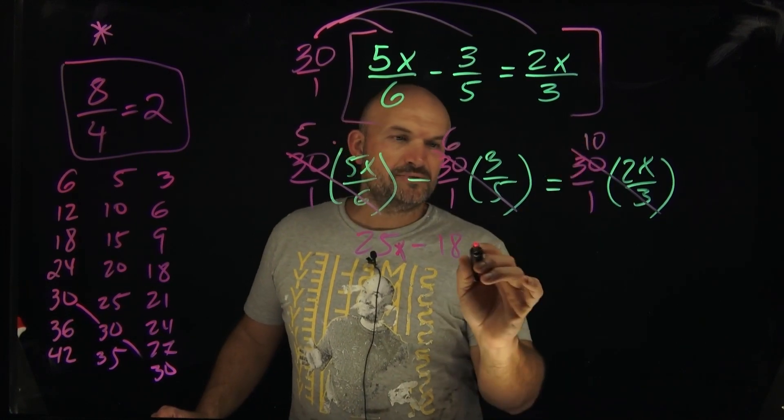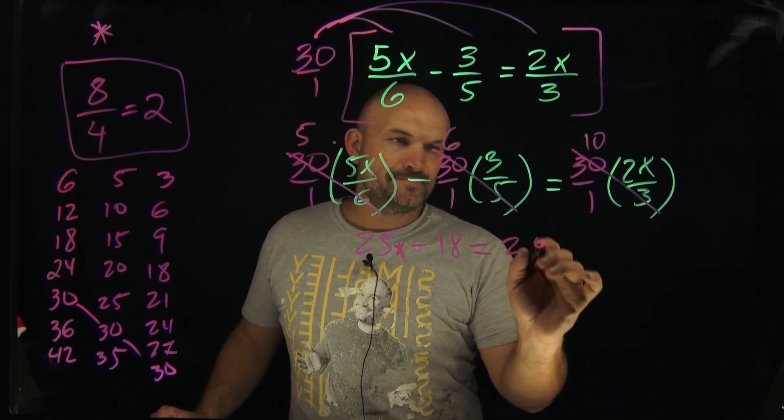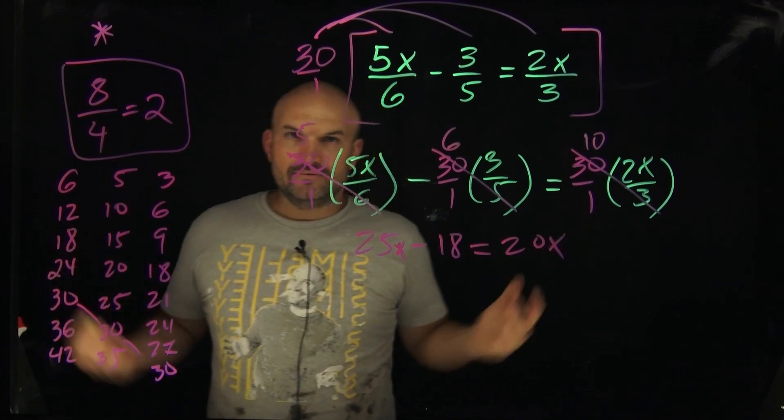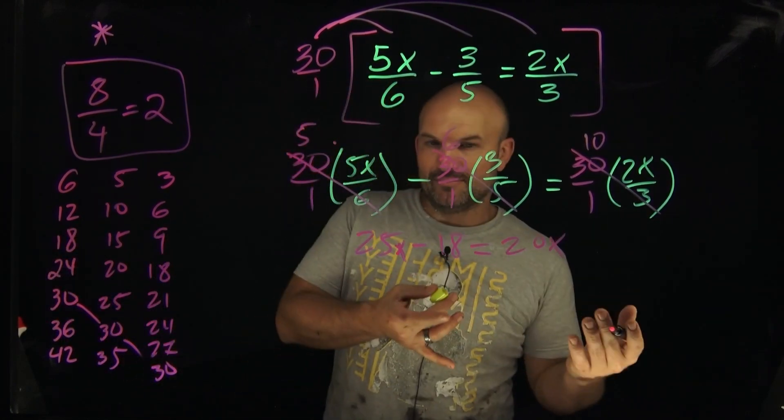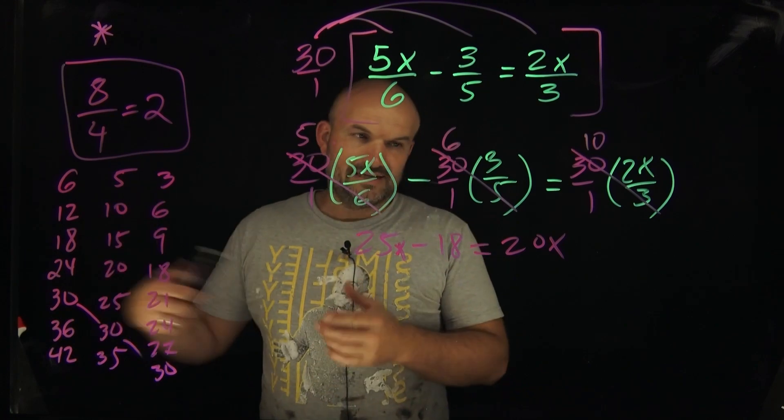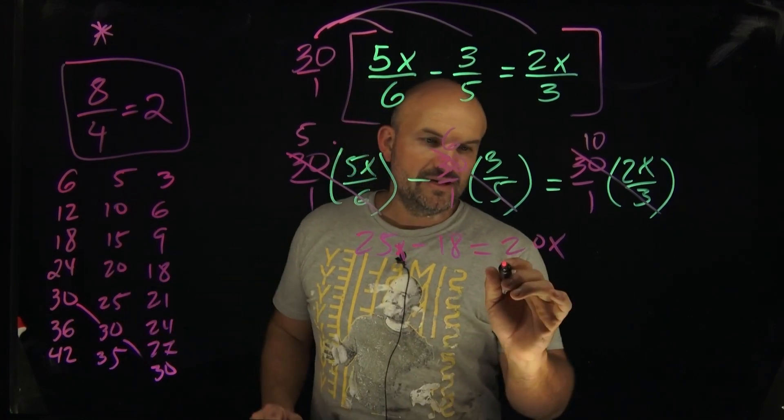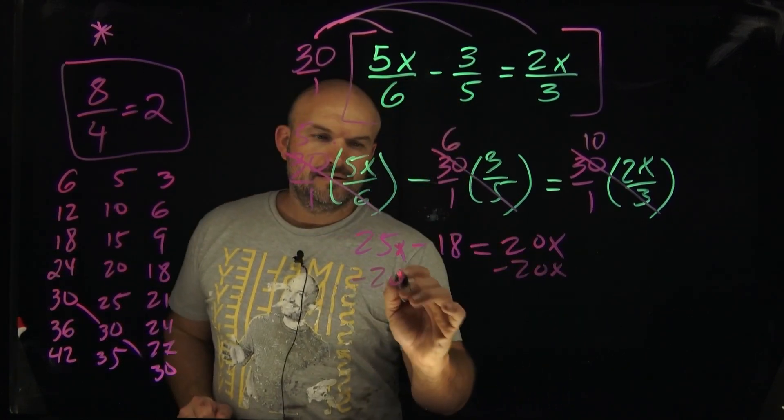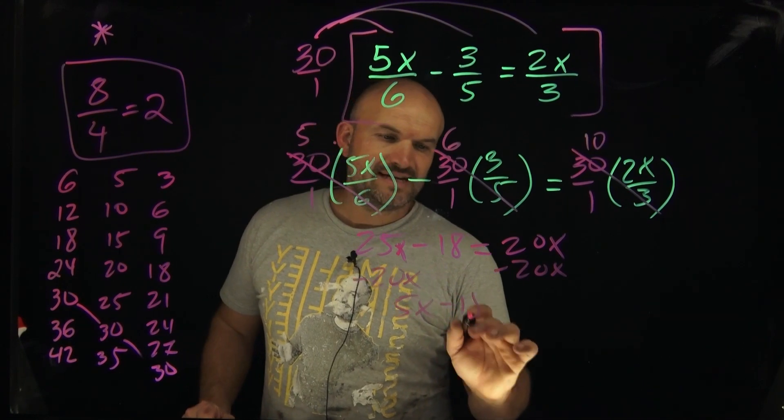And then we have 10 times two, which is going to equal 20x. Okay. So now we have an equation. We have variable on both sides. And I always like to get my variables on the same side. I always like to make them positive. So I'm going to subtract 20x on both sides. I get 5x minus 18 equals zero.